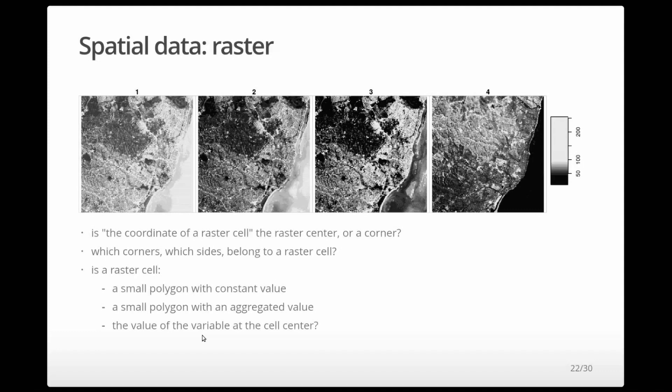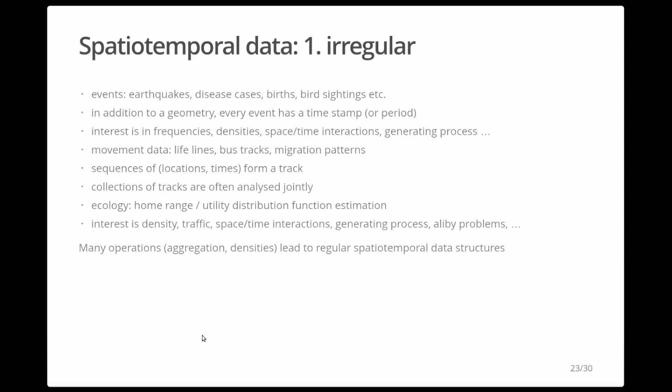For spatiotemporal data — which interests me more than purely spatial data — we have different types. Irregular types include events like earthquakes or disease cases that happen anywhere in space and time, and movement data where every event has a timestamp. You're interested in frequency, density, space-time interactions, and the generating process. Movement data — tracking data — is a special case here.